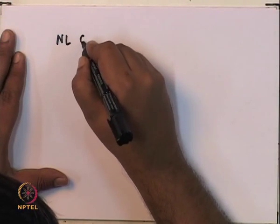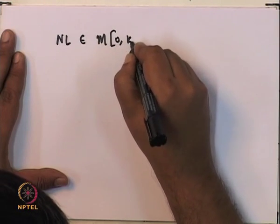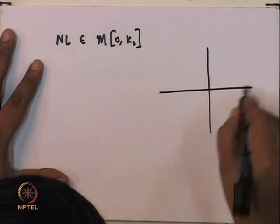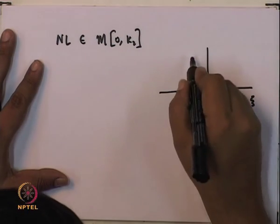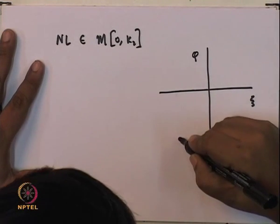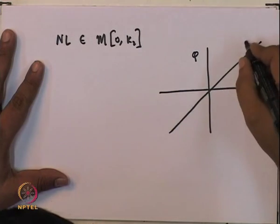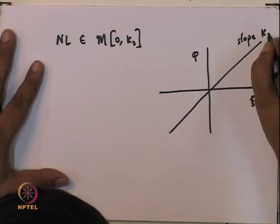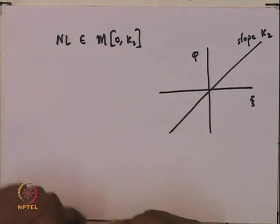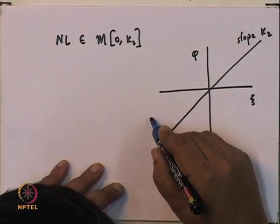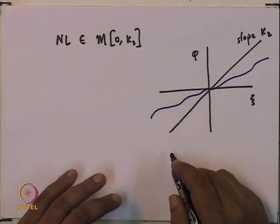We will continue from the last lecture: after finishing the k1-infinity sector, we had started looking at the 0-k2 sector. Let us think of a nonlinearity in the 0-k2 sector, where xi is the input to the nonlinearity, phi is the output, and we have a line with slope equal to k2. The nonlinearity lies between these two bounds.